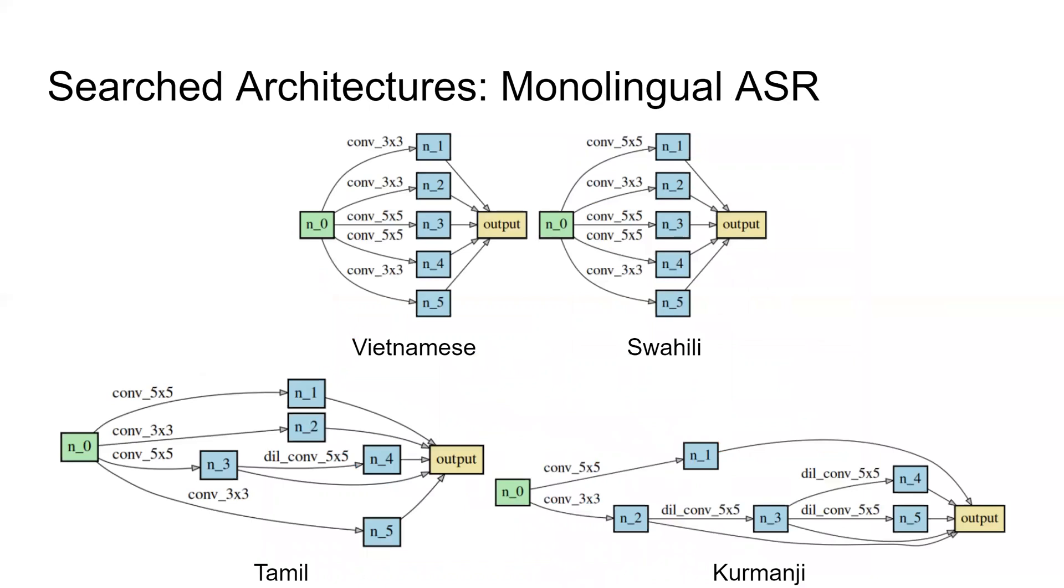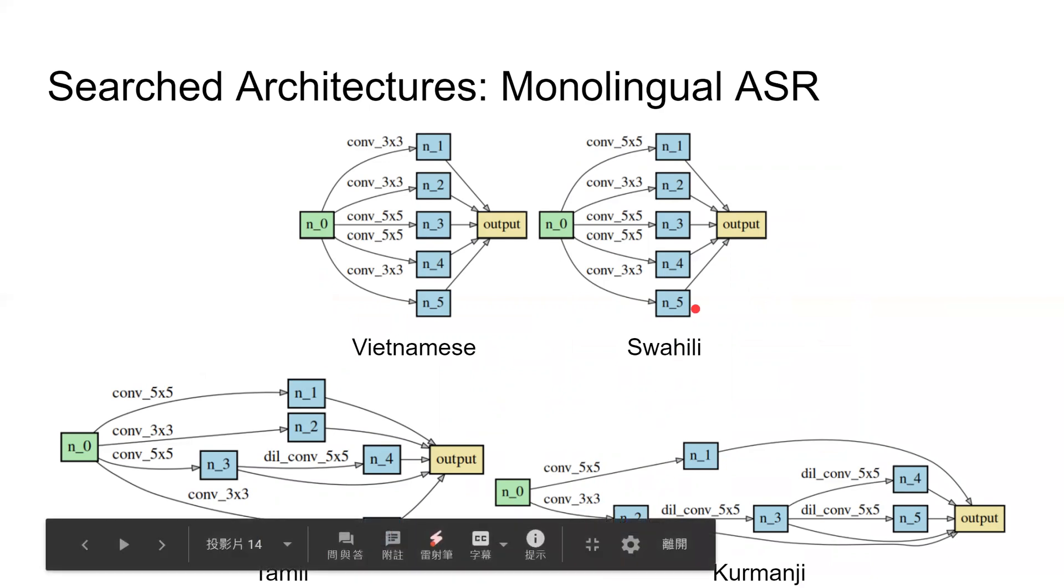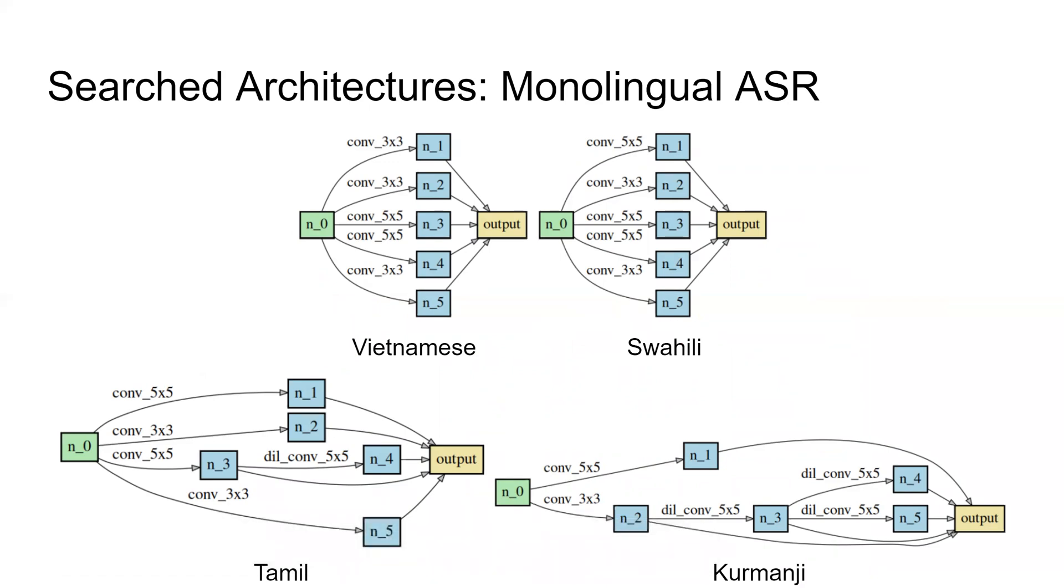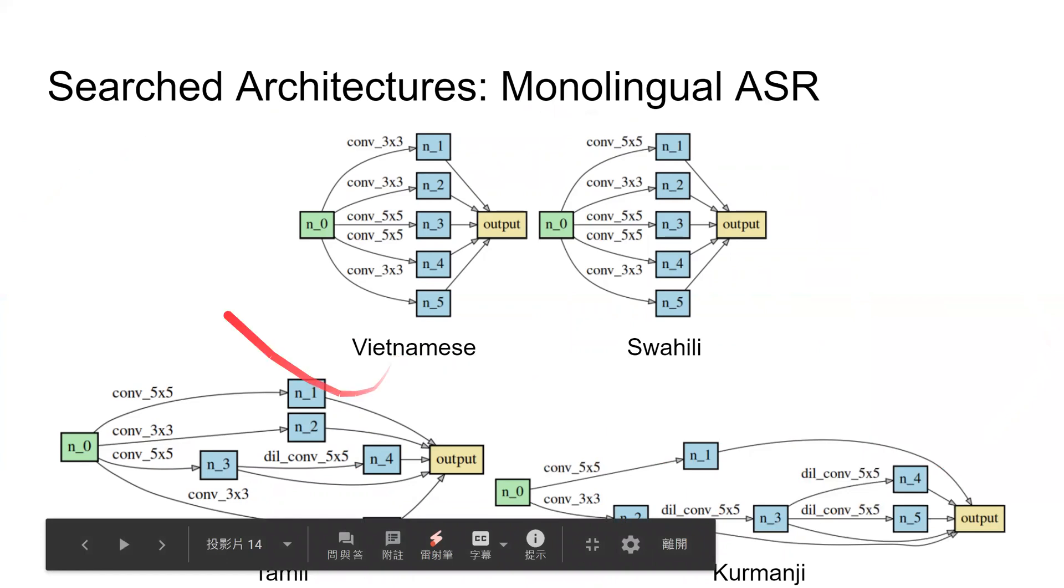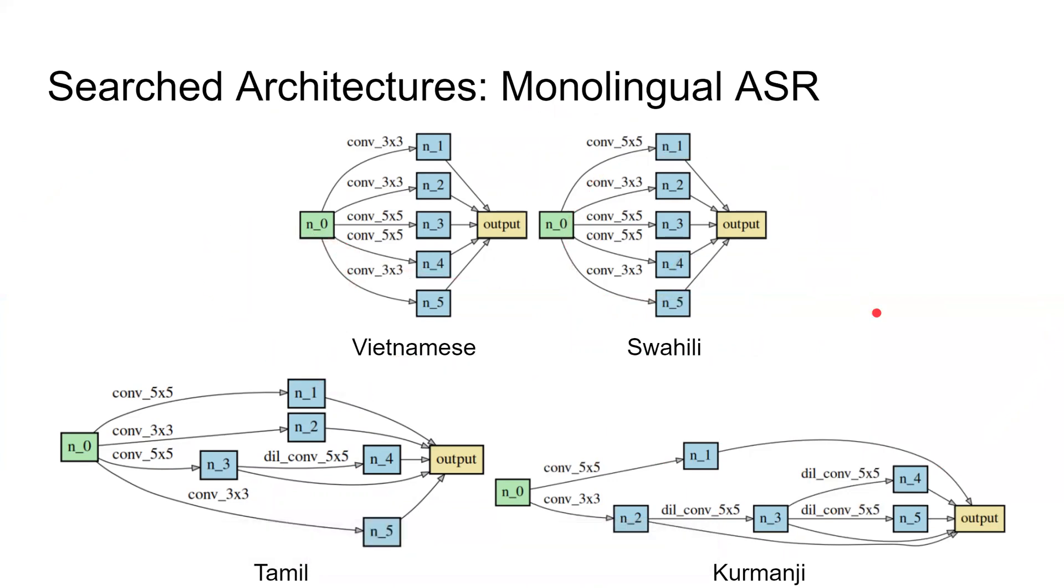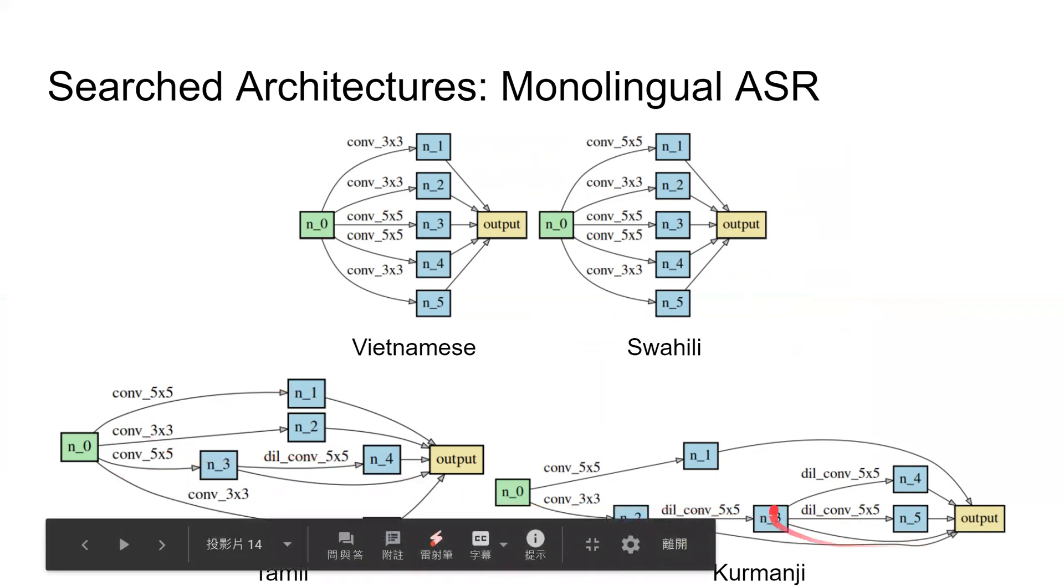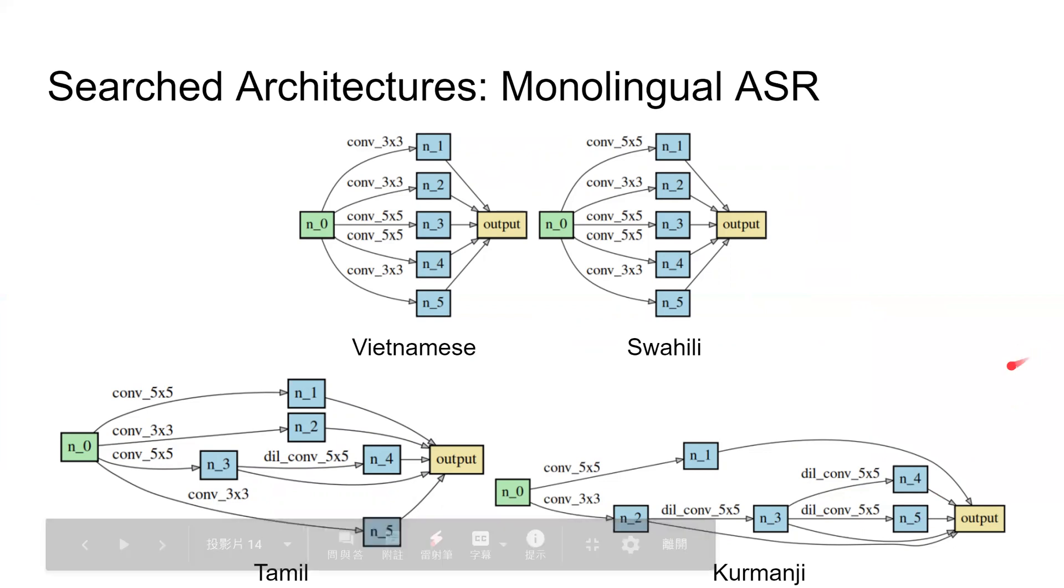We further plot and analyze the searched architectures by the full DARTS-ASR. To simplify the illustration of architecture, we use a node to represent a feature map. And for each node, we plot the most dominant transformation among all candidates in all input edges. The searched architectures for each language on monolingual ASR is shown here. The architectures of Vietnamese and Swahili are similar. They are very shallow, and all of the dominant transformations are standard convolutions. The architectures of Tamil and Kurmanji are quite different from one another. Interestingly, in deeper architectures, the dilated convolutions are used more often.